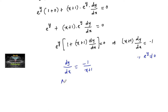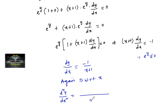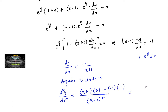Again differentiating with respect to x, we have d²y/dx² equal to — applying the u/v (quotient) rule — (x+1) times the differentiation of -1, which is 0, minus (-1) times the differentiation of (x+1), which is 1, all over (x+1)². This gives 1/(x+1)².